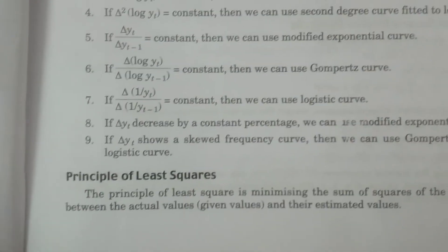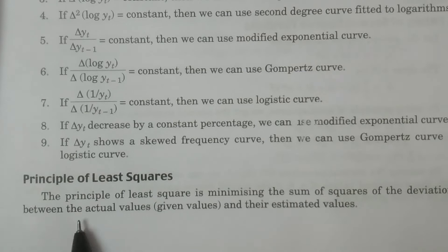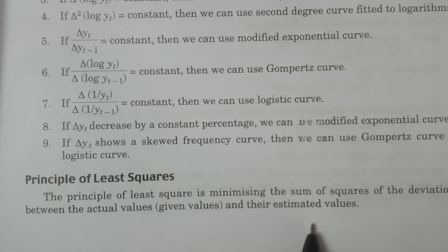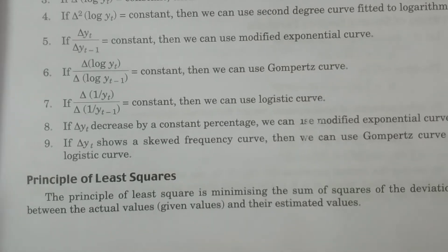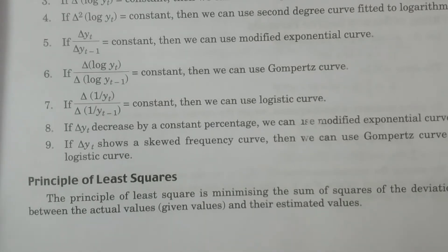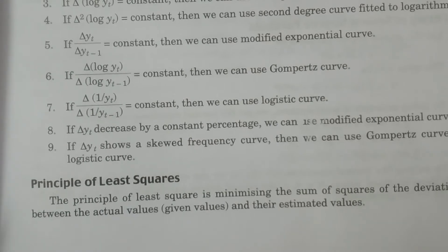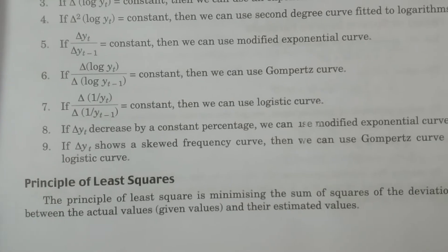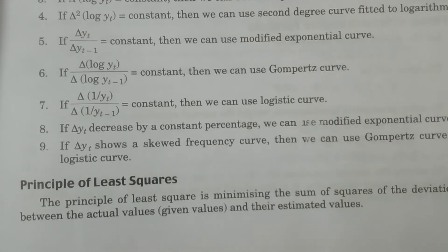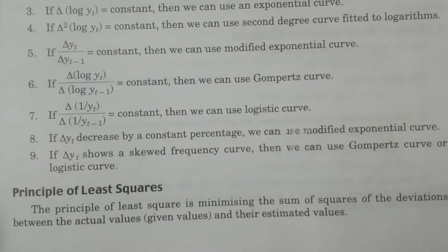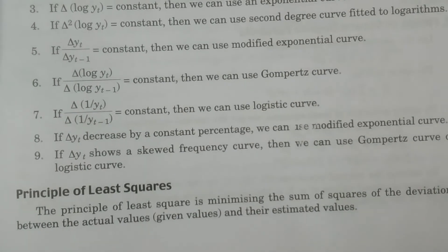The principle of least squares is: minimizing the sum of the squares of the deviations between actual values and their estimated values. The principle of least squares minimizes the error — that is, the deviation between the actual values and the estimated values. This error component is minimized by varying the parameters in the functional mathematical relationship.